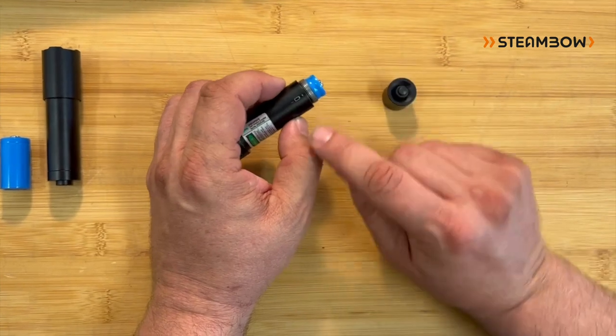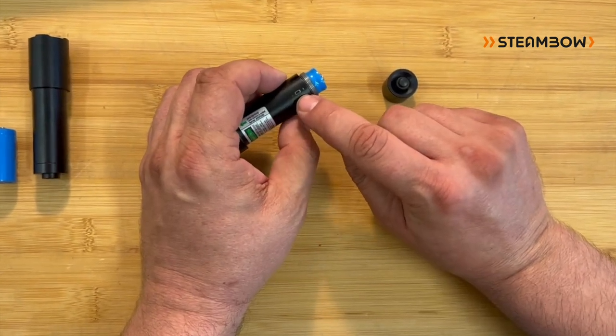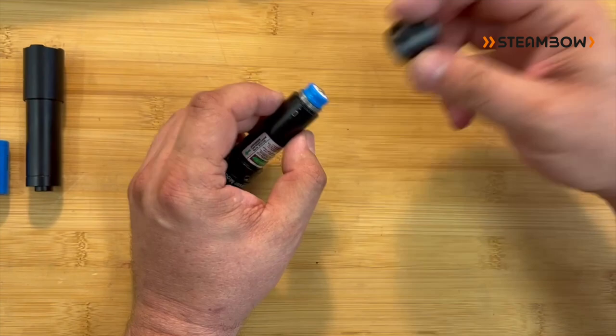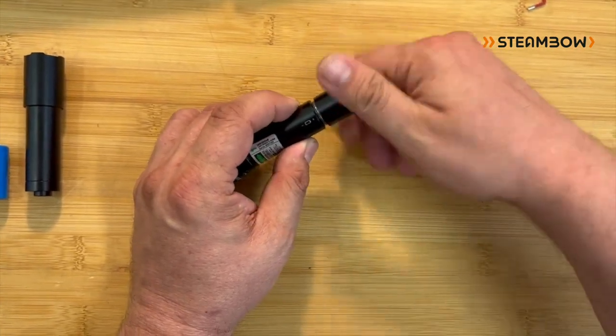Just insert the battery. You have here a sketch of the orientation. Plus side goes to the switch. Just screw it down.